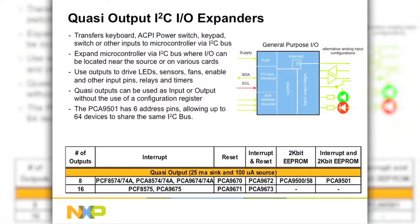NXP offers a family of 8-bit and 16-bit quasi output expanders with different features including reset, interrupt, and EEPROM. Quasi outputs are totem pole outputs that sink and source current, but source current strongly for only one half of a clock cycle and use an internal 100μA current source to maintain the pin high.